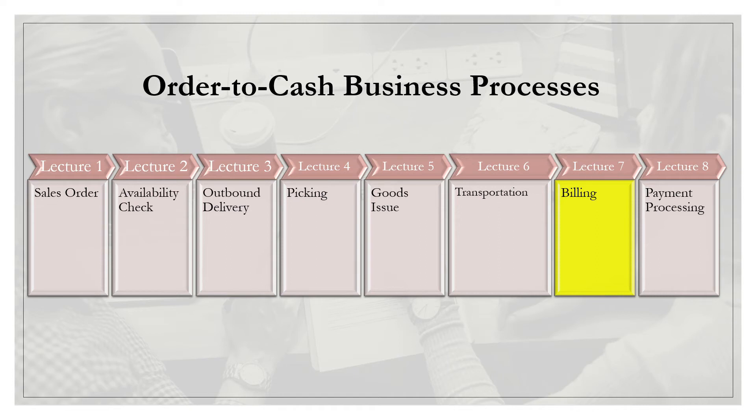Welcome back. So we're on Step 7 or Lecture 7 of Order-to-Cash Business Process. So we went over creating sales order, doing the availability check, creation of outbound delivery document, picking and packing, posting goods issue, and transportation, and now we're at the billing stage.